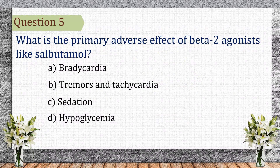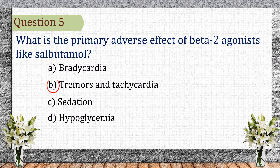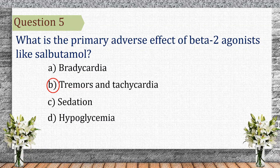Question 5. What is the primary adverse effect of beta-2 agonists, like salbutamol? The correct answer is B: tremors and tachycardia. Beta-2 agonists can cause tremors and tachycardia due to beta-2 stimulation in muscles and some beta-1 activation in the heart.